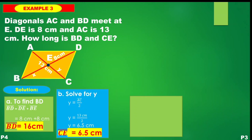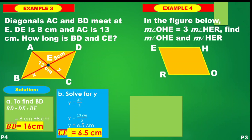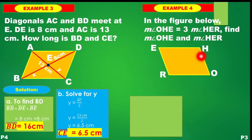Let's move on to example number 4. In the figure, we have parallelogram EHOR. It says the measure of angle OHE is 3 times the measure of angle HER. We are asked to find the measure of angle OHE and the measure of angle HER.